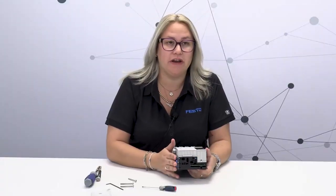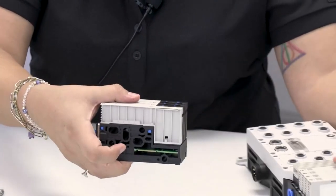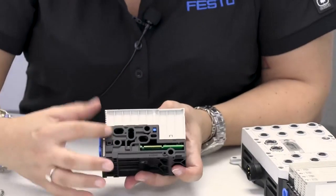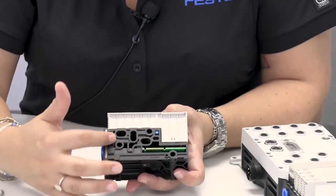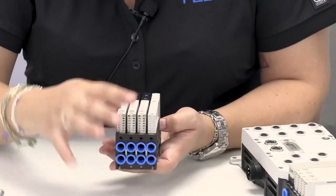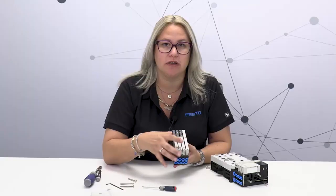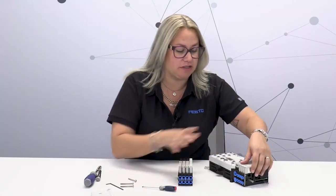One nice thing that we can see here is the cross channels. With the VTUX what we have done is we have created large cross channels here so this allows for larger flows. One of the things that we've optimized is that one valve size can give you two different flows. That is controlled with the sub base.